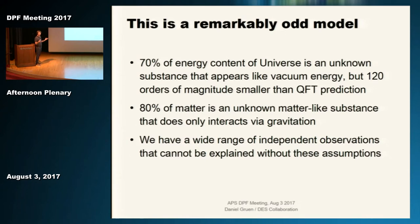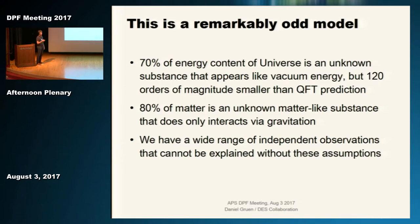Before going into more detail, let's take a step back and realize just how remarkably odd that model is. I just told you that 70% of the energy content of the universe is an unknown substance that appears like vacuum energy—in fact, it is 120 orders of magnitude smaller than the vacuum energy that QFT would predict. Something like 80% of matter is an unknown substance that acts gravitationally like matter, but that's the only interaction we have found it has at all. Yet we have a wide range of independent observations that you can't explain without these two strange assumptions.